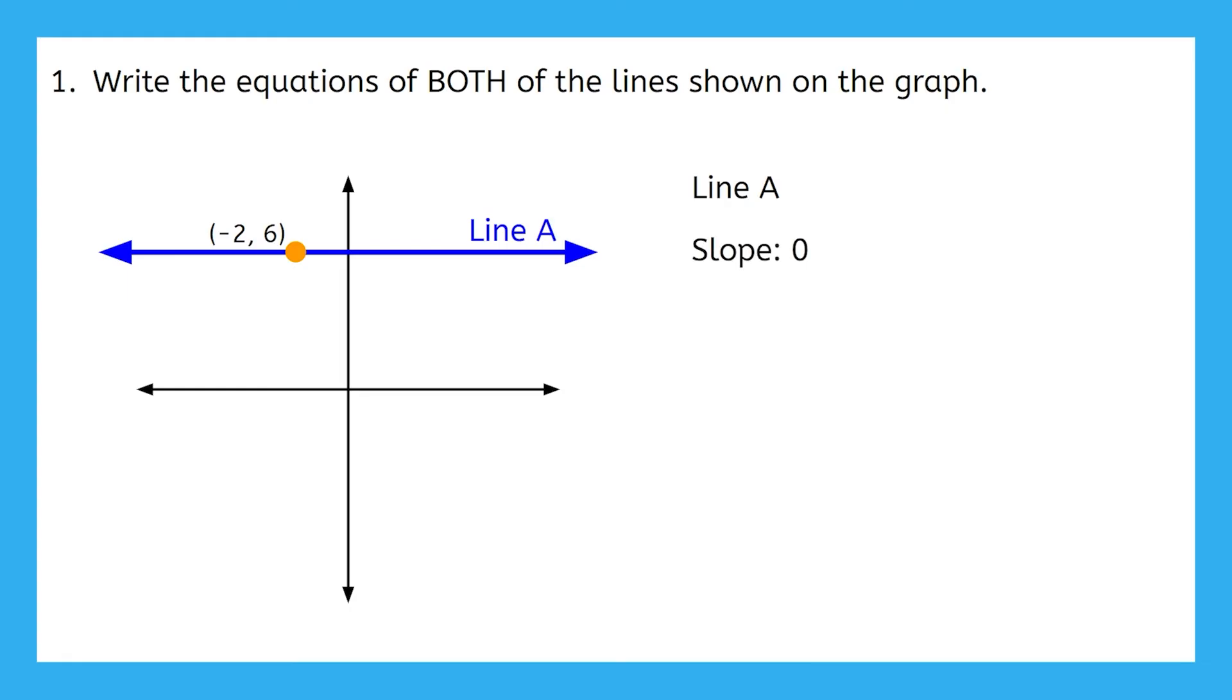If I imagine the y-intercept here, what would its coordinates be? Yeah, it's going to be at 0 comma 6, because it's on the y-axis and it's at the same height as the rest of the line. Using that slope of 0 and the y-intercept, or by recognizing that this is a horizontal line where all of the points on this line will share a y-coordinate of 6, we get the equation y equals 6.